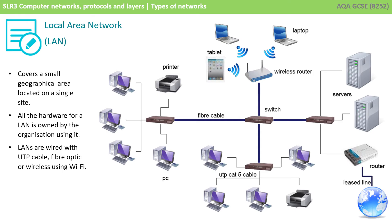A local area network covers a small geographical area, typically located on a single site or even a single building. All the hardware for the LAN tends to be owned by the organisation using it, and LANs typically are wired with UTP cables, fibre optic cables, or wireless communication using Wi-Fi.